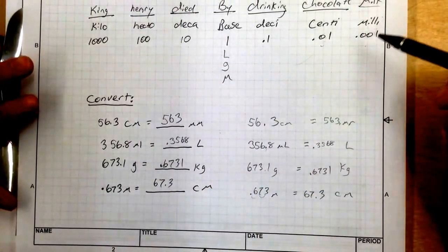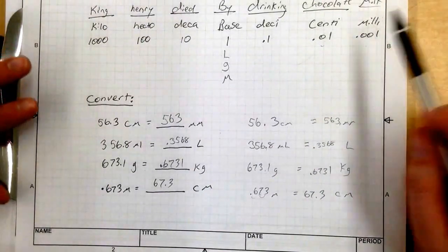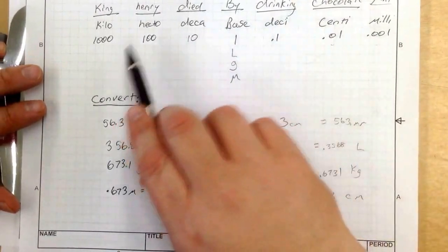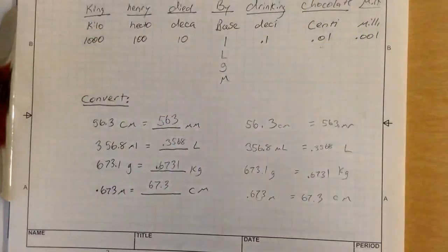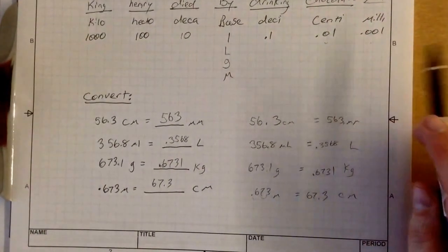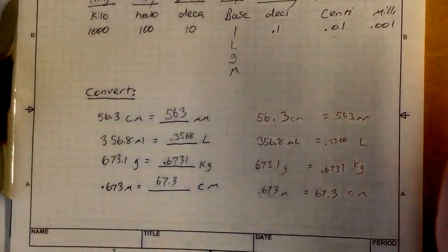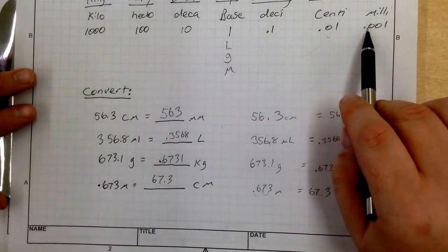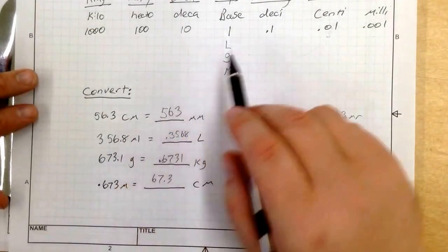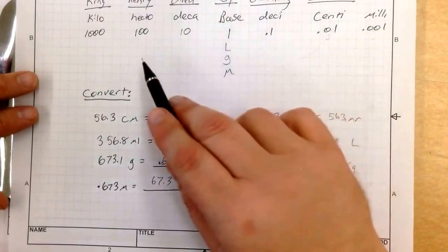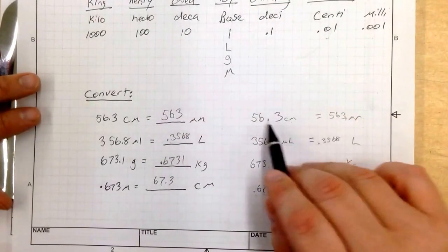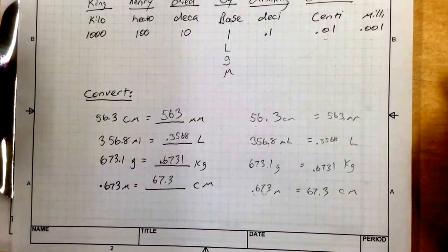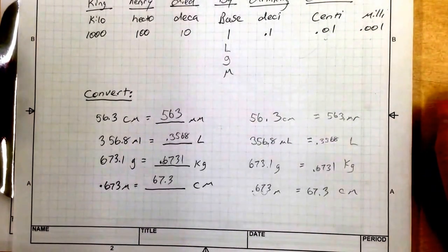Doing metric conversions is a little bit confusing, but all you have to do is remember King Henry died by drinking chocolate milk, kilo hecto deca base, deci centi milli. And you have to remember which way you're going. So if you'd like, copy this chart down in your book as well. And all you have to do is go to the right or go to the left, remember if you're getting bigger or smaller, and move the decimal point over accordingly. If you have any questions, stop this video, rewind, replay, as many times as you need to get the concept.